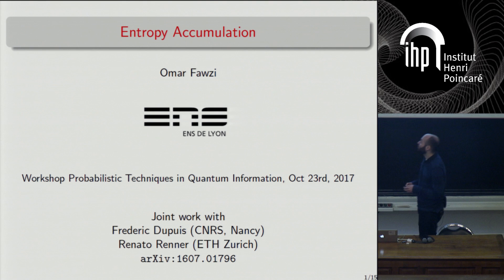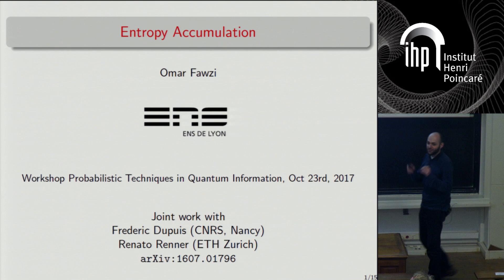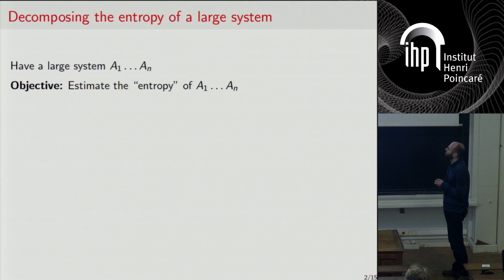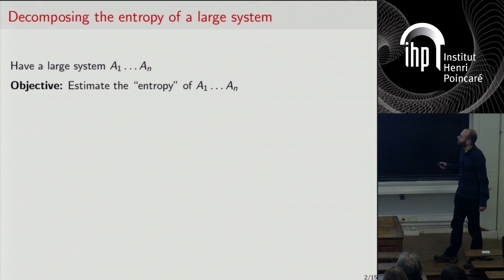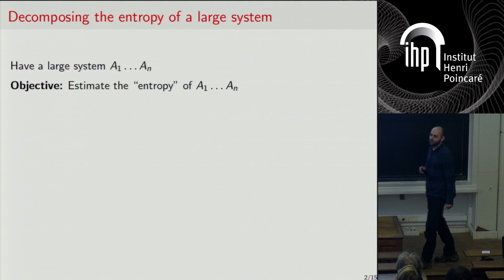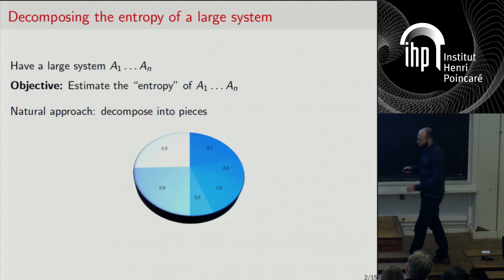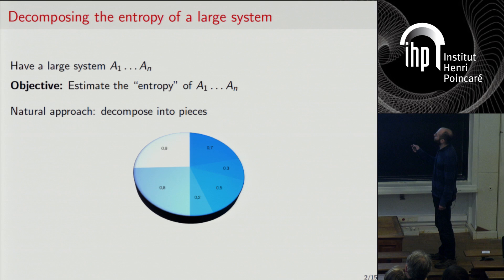I'm going to try to focus a bit more on the actual theorem than on the applications, since this is mostly a mathematical audience. So let's start with the general objective. We assume we have a large system composed of n subsystems — think of them as bits or qubits. Our objective is to estimate some kind of operationally relevant entropy of A_1 to A_n, the global entropy of this system. We would like to write this global entropy as a function of the entropies of the individual pieces, the A_i's — decomposing the entropy of a big system into the entropies of its parts. We'll see under which conditions this is possible.